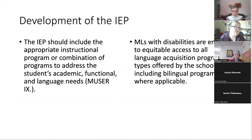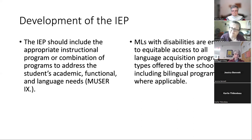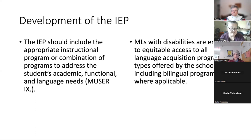An IEP should include the appropriate instructional program, or combination of programs — that's where the ILAP and the IEP work together to address the student's academic, functional, and language needs. If the child has goals related to language acquisition, they may be in the functional part of the IEP. Multilingual learners with disabilities are entitled to equitable access to all language acquisition program types offered by the school, including bilingual programs. It is completely appropriate for a child identified with an exceptionality to receive both ESOL services and specially designed instruction.